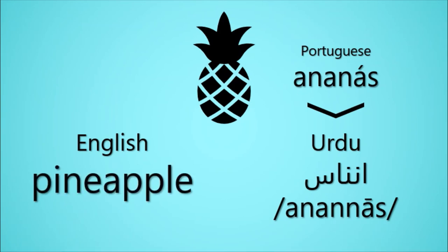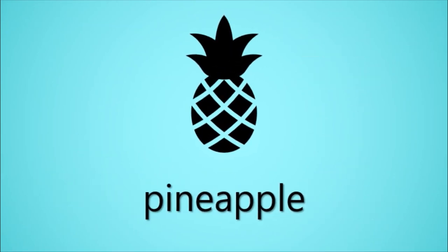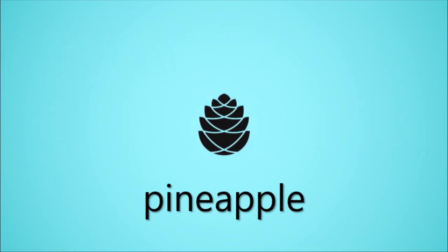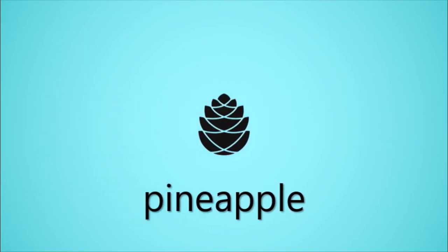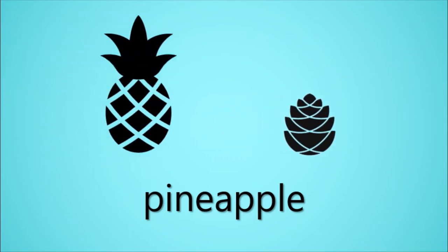That's right – the English word pineapple existed before English speakers had ever seen one of these. What it meant back then was pinecone. In the past, the English word apple didn't simply refer to this fruit; it could refer more generally to the produce of a tree, whether a fruit, a vegetable, or something else. So the roughly apple-sized fruit of a pine tree, which we call a pinecone today, was called a pineapple – the apple, or fruit, of a pine tree. But then this fruit from South America came along, which looked in some ways similar to it, so English speakers called this fruit a pineapple too.